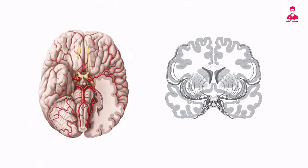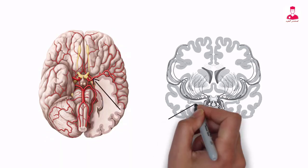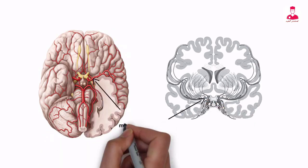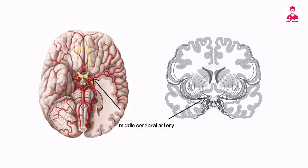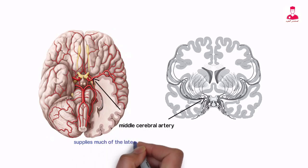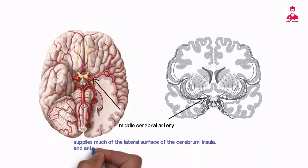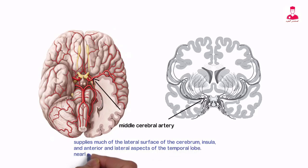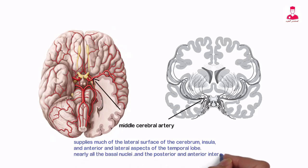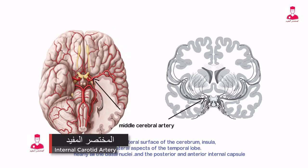The middle cerebral artery is by far the largest of the cerebral arteries and is considered a direct continuation of the internal carotid artery. The middle cerebral artery gives off many branches as it supplies much of the lateral surface of the cerebrum, insula, and anterior and lateral aspects of the temporal lobe, nearly all the basal nuclei, and the posterior and anterior internal capsule.